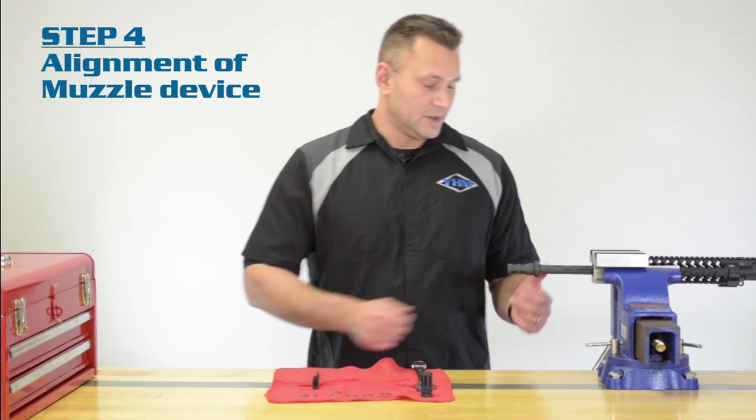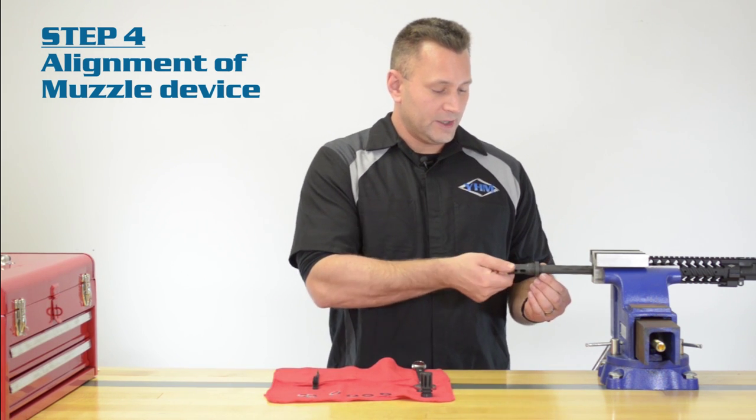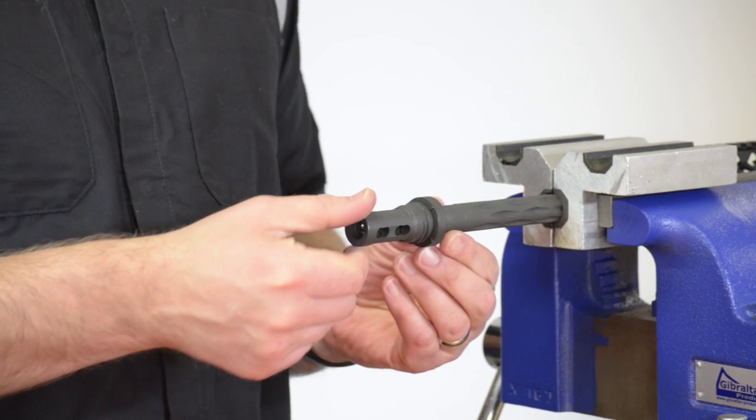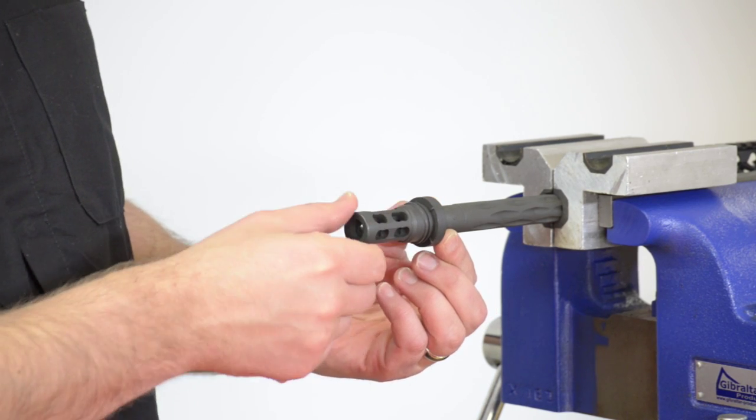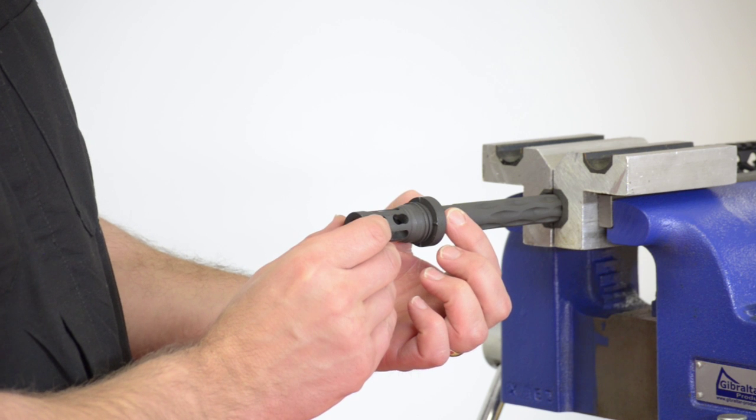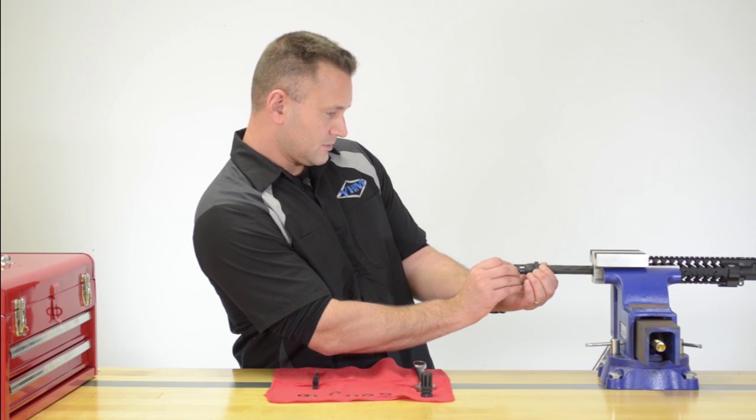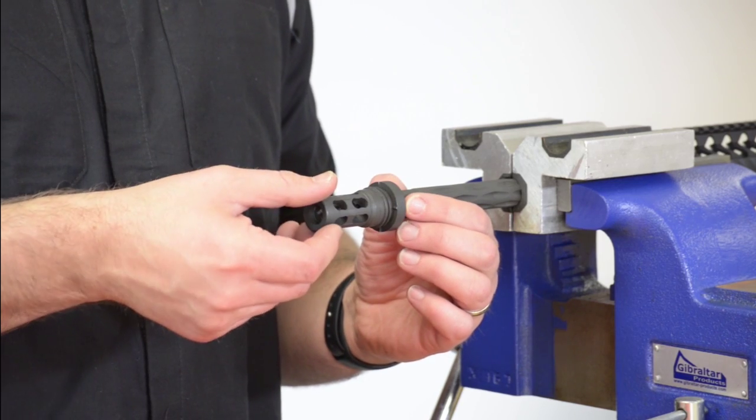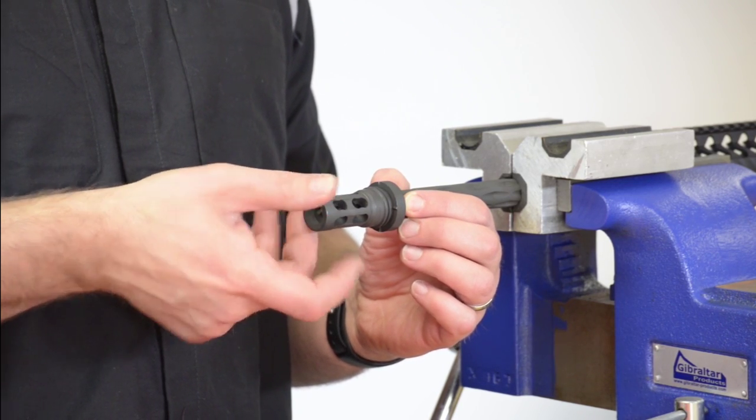Step four, you want to unscrew the brake just until it sits at its proper alignment. You want the closed portion to face straight down, and the top row of ports to face straight up. Once you hit that point, give it about an eighth of a turn more.